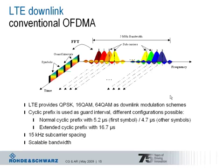LTE provides QPSK, 16QAM, and 64QAM as downlink modulation schemes, which can be assigned to UEs in the resource allocations.